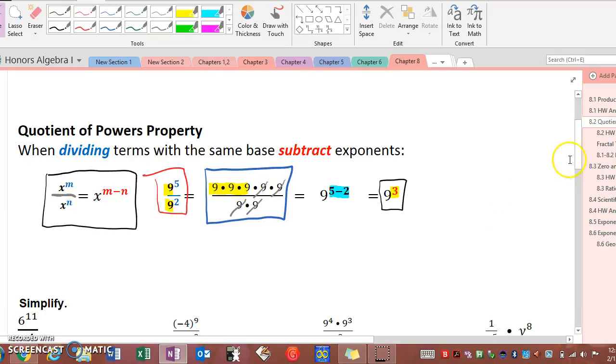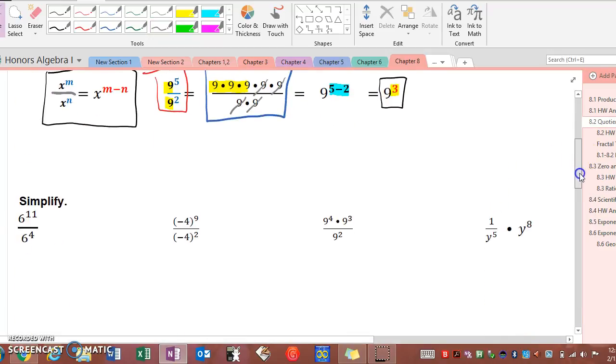Let's try some examples. First example we have 6 to the 11th divided by 6 to the 4th, so we have the same base, both of them have a base of 6. So all we need to do is subtract our exponents, and this is your think step. I don't expect you to write that out, but I do think that's what's got to go through your mind in order for you to get your final answer in exponential form.